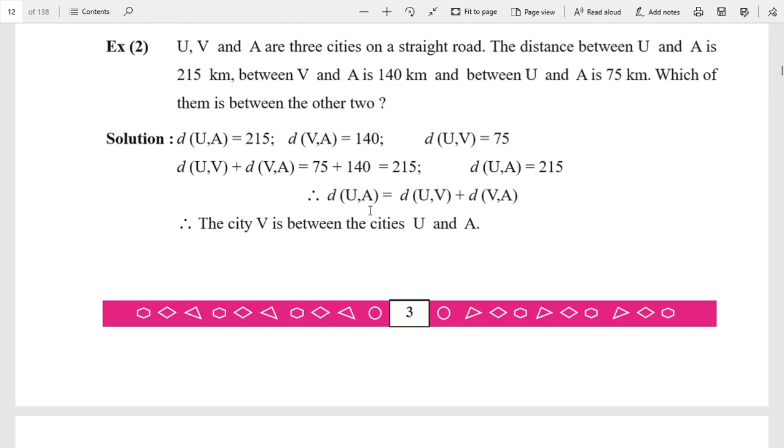Distance UA is equal to distance UV plus distance VA. So U and A are end line of V. That is, the city V is between the cities U and A.